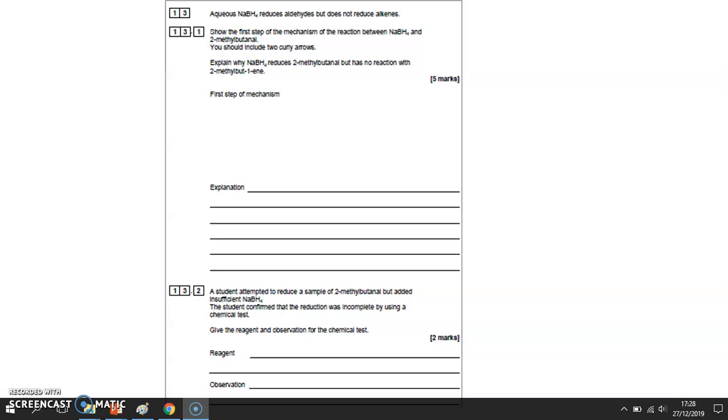Show the first step of the mechanism of the reaction between sodium borohydride and 2-methylbutanal. So that's an aldehyde. Sodium borohydride makes H- ions, and the H- has got a lone pair of electrons that attacks the carbon of the carbon-to-oxygen double bond.